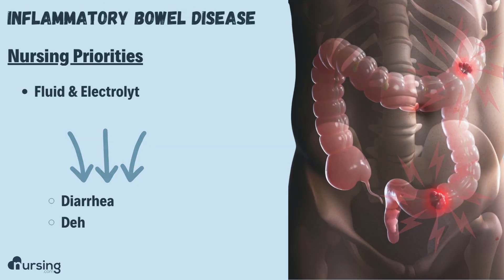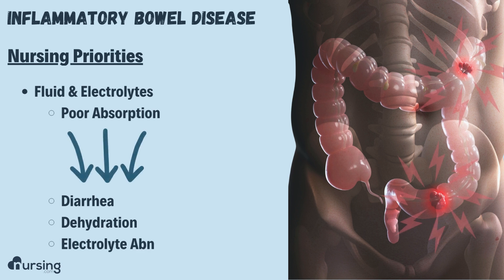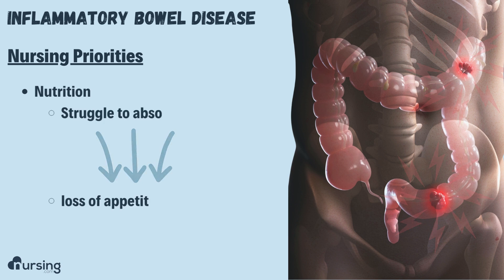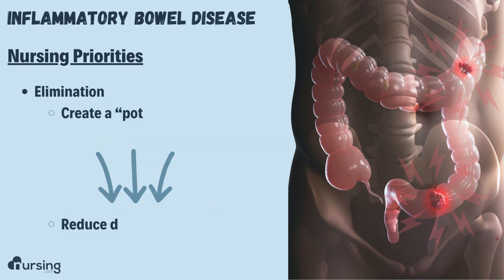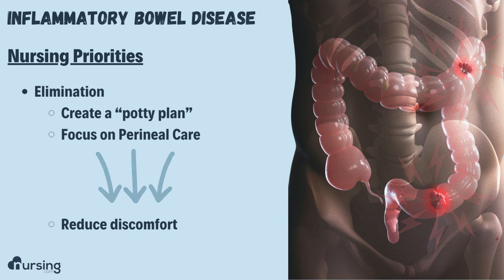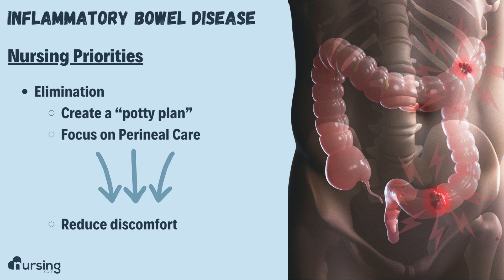Despite the differences, all inflammatory bowel diseases share the same top nursing priorities. The first is fluid and electrolytes — because of the poor absorption, we can see diarrhea, severe dehydration, and electrolyte abnormalities. We'll also see that patients struggle to absorb nutrients and often lose their appetites, known as anorexia, so nutrition needs to be a priority as well. Finally, with multiple bloody stools a day, we prioritize elimination — that includes having a potty plan and doing good peri care to reduce the risk of skin breakdown or discomfort around the perineal area.